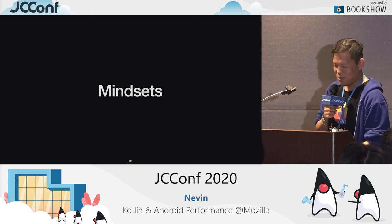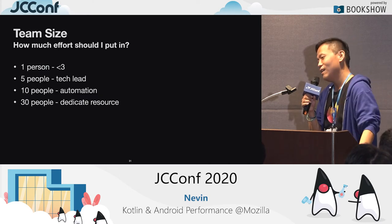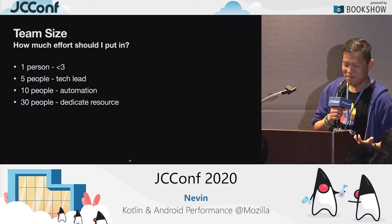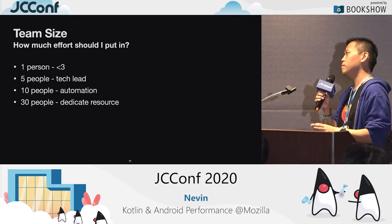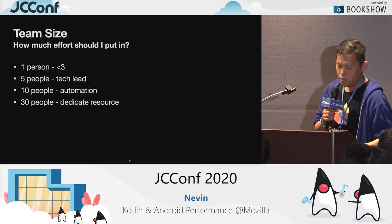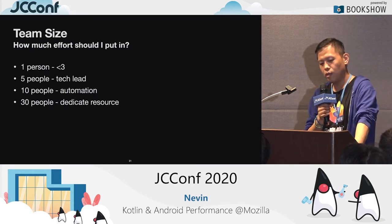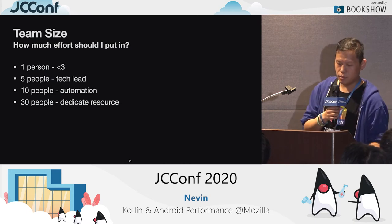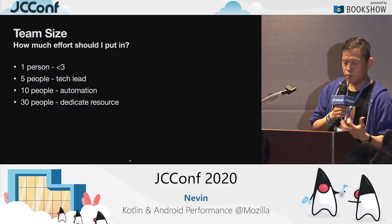Now I'm going to talk about the mindset. I had an issue because I didn't know how much effort to put in. Michael told me: if you're the only person working on the product, just put performance in your heart — but you probably don't have time because you need to ship features. If you have five engineers, maybe the tech lead should look at performance. If you have ten or more, you need some automation tools like Firebase Performance Monitoring or Android Vitals. If you have 30 people, you probably need a dedicated resource — a couple of people focused on performance.